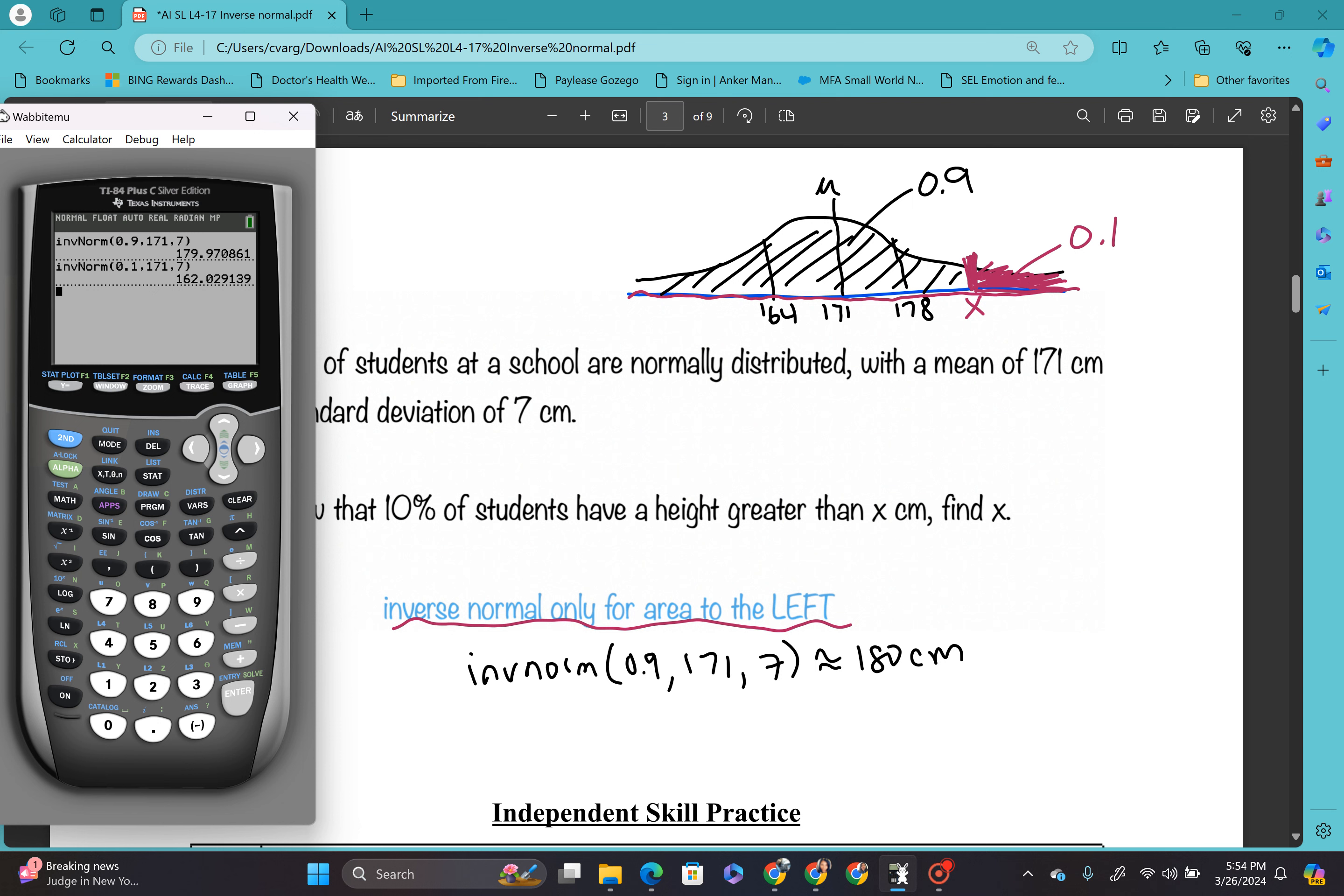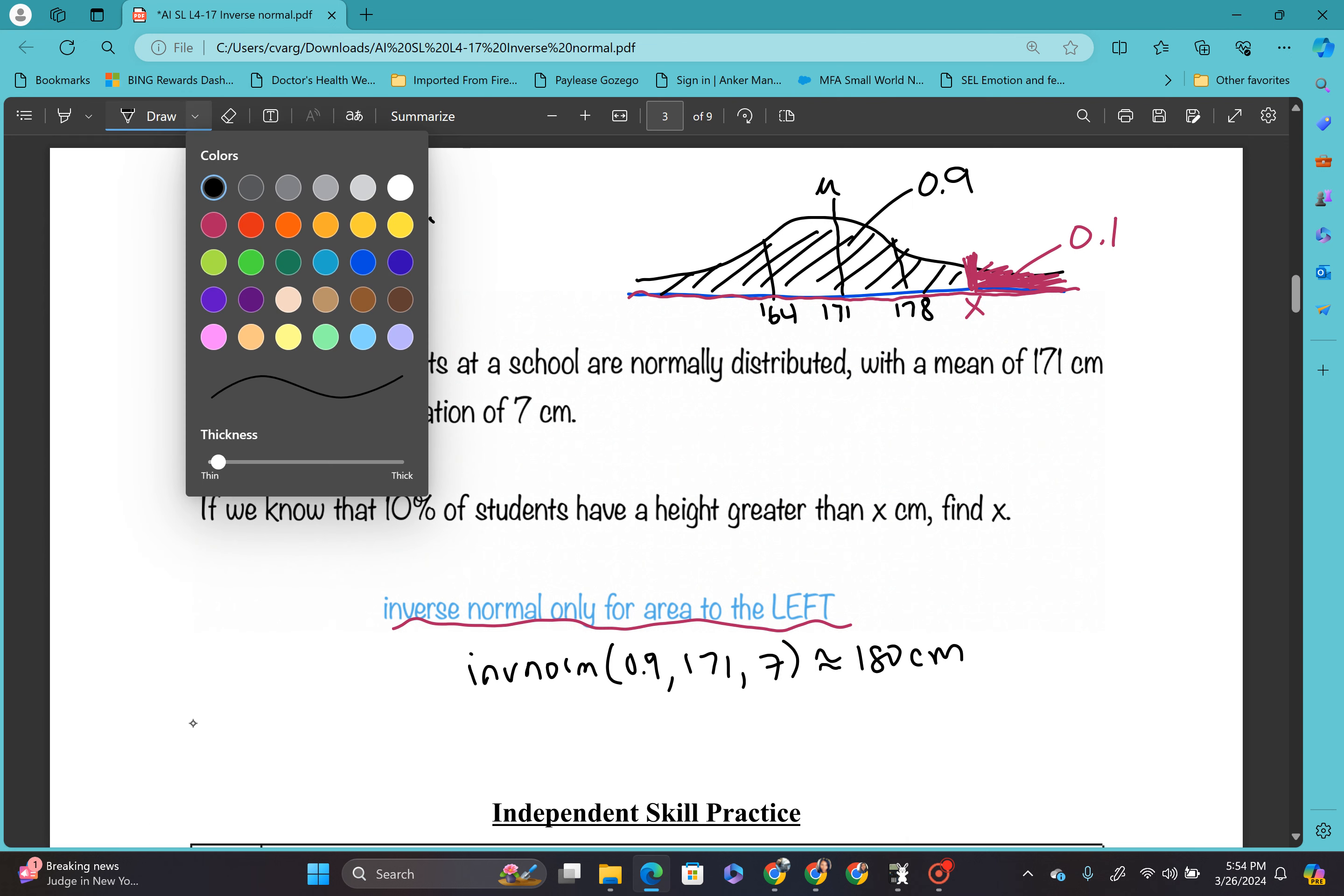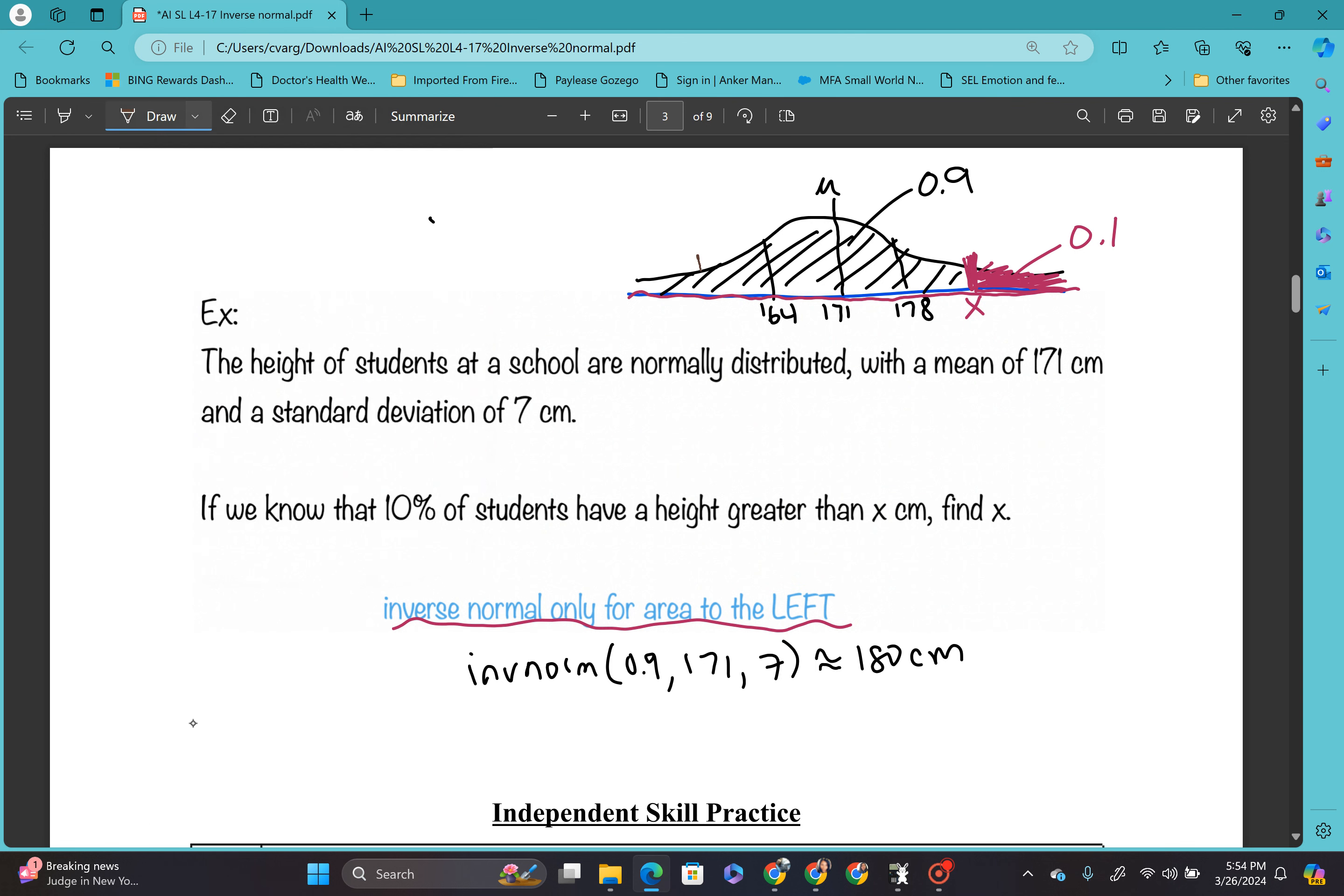So when you do that, you're going to get 162. So you might realize, okay, hey, wait, 162 is somewhere over here. This is where 162 is. So hey, my calculator is giving me this right here. So you can use that information to help you figure out remembering that symmetry. This and this are the same distance. So that's 10%.